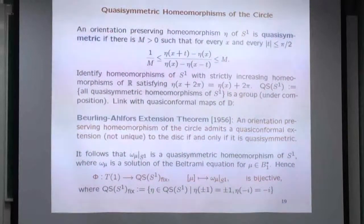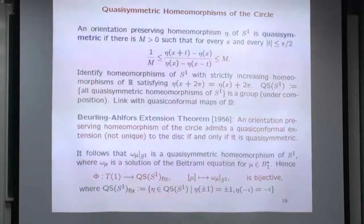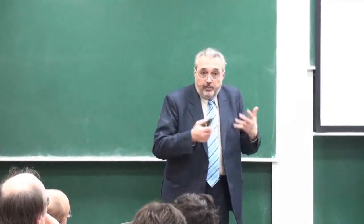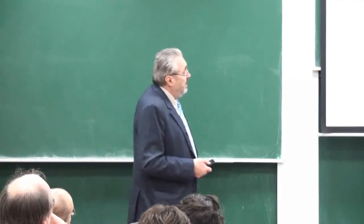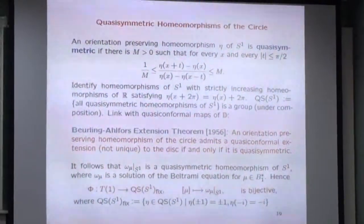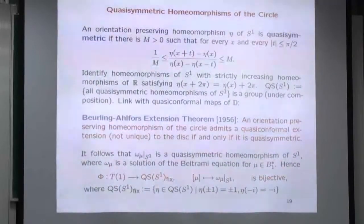Another subject I need: quasi-symmetric homeomorphisms of the circle. An orientation-preserving homeomorphism of S¹ is quasi-symmetric if there exists M such that for every x and every small t, you have a second-derivative-like estimate: |h(x+t) − h(x)| / |h(x) − h(x−t)| ≤ M. I identify homeomorphisms of S¹ with strictly increasing homeomorphisms of the line. QS(S¹) is the group of all quasi-symmetric homeomorphisms — the composition is again quasi-symmetric, which is not difficult to check.